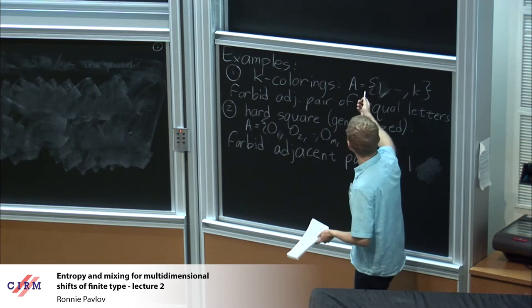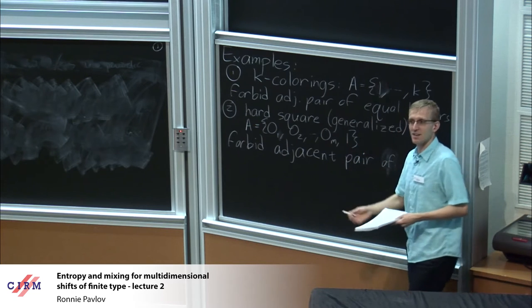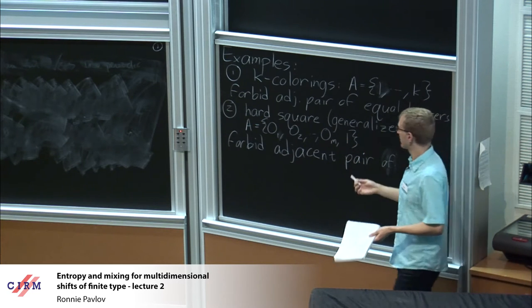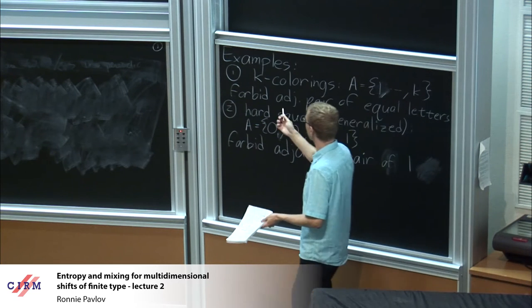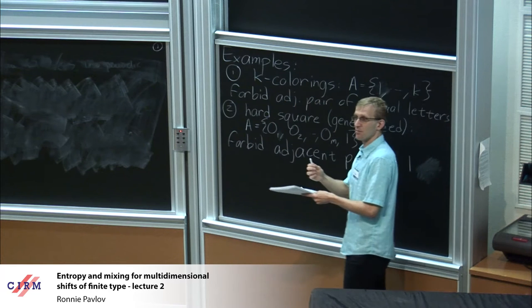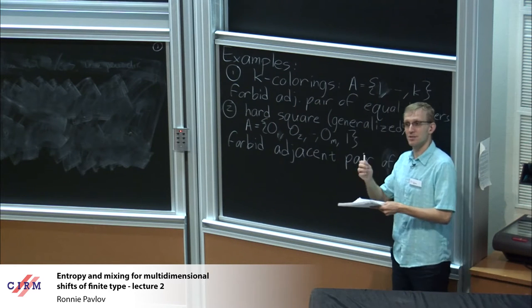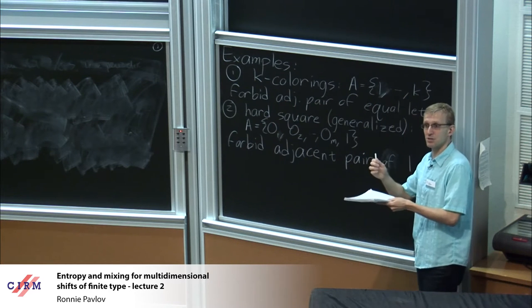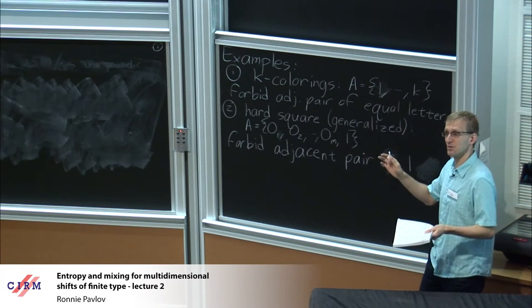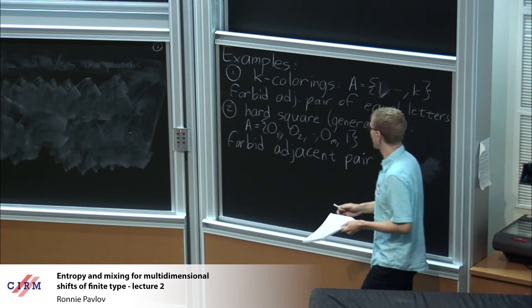K colorings just means that you have K letters in your alphabet — you can think of them as colors. The only thing you forbid is an adjacent pair which is equal. So for instance, 2,2 is no good. You can't have 2,2 next to each other.